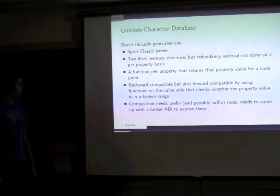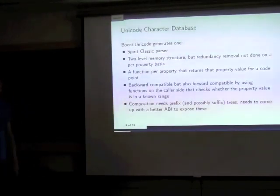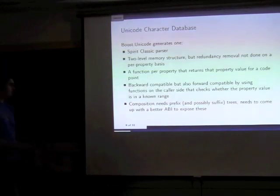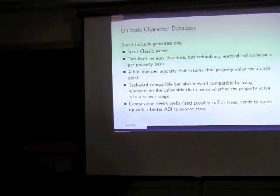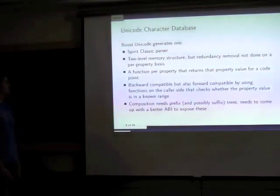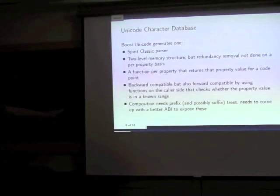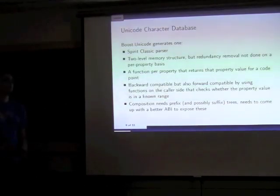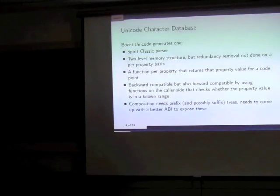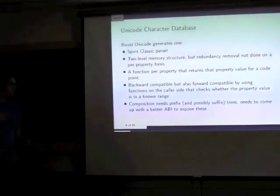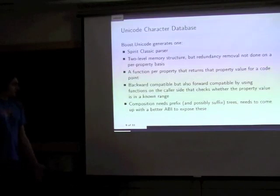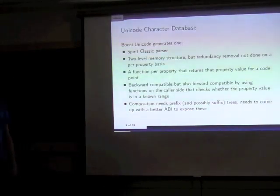To remove redundancy, I use a two-level memory structure. It's also forward-compatible: I check that the property returned by the binary library matches known values, and if it's not one we know, we fall back to 'unknown.' For composition, this is a bit complicated because I need to take a decomposed string and find ways to compose it, which requires exposing prefix and suffix trees. The suffix tree is for right-to-left iteration. I need to come up with a better API to expose this, but it works.